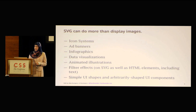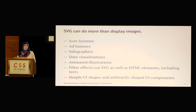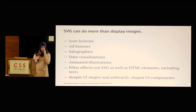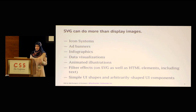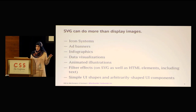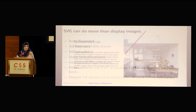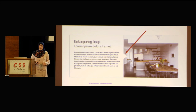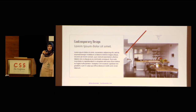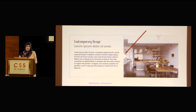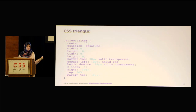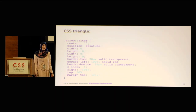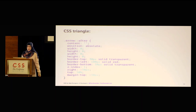SVG is perfect for creating UI shapes and arbitrarily shaped UI components. If you want to create a circular menu, SVG is awesome for that. Even though I'm a huge SVG advocate and always tell people to use SVG instead of CSS for creating shapes — because CSS shapes are fake, they're not real shapes, they're not semantic — I sometimes do cheat. For example, those little triangles we add to the UI are great candidates for SVG, but productivity-wise, it was faster for me to just use the CSS technique instead of creating an SVG image and referencing it.